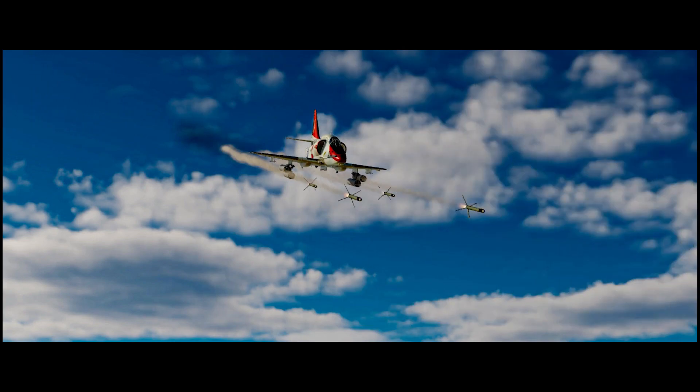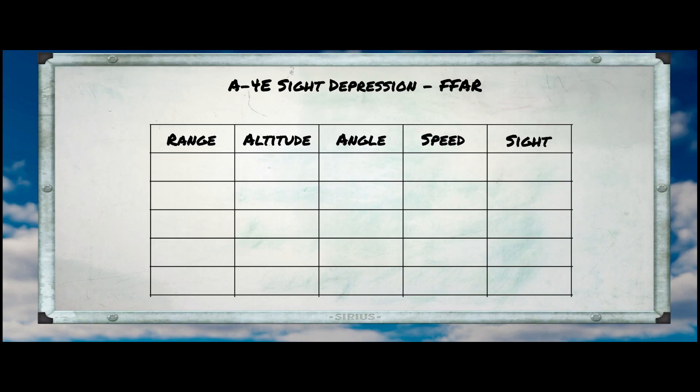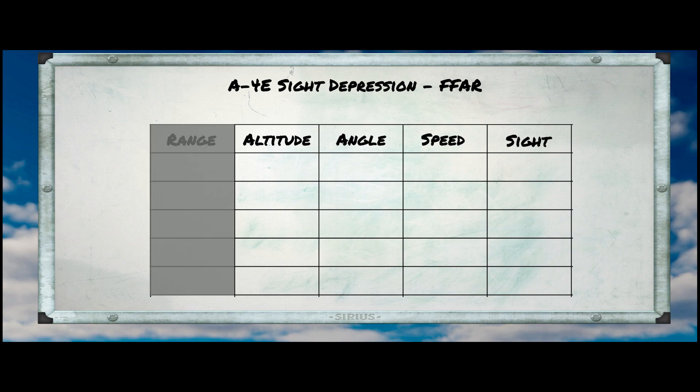Let's get started. First, I'll remind you of the table we're trying to fill out, though we need to make a small change. With the A-10 we had a range column because the HUD reports range to target; we don't have that luxury with the A-4. Although we can derive the range to target using trigonometry once we know the dive angle and the altitude above ground.